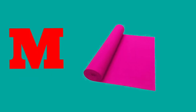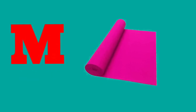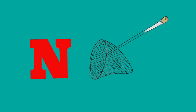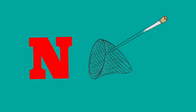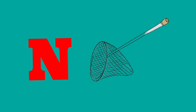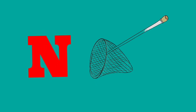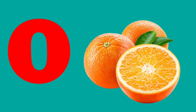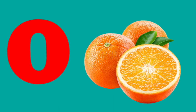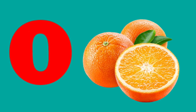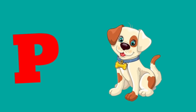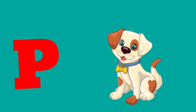M is for mat, m-m-mat. N is for net, n-n-net. O is for orange, o-o-orange. P is for pet, p-p-pet.